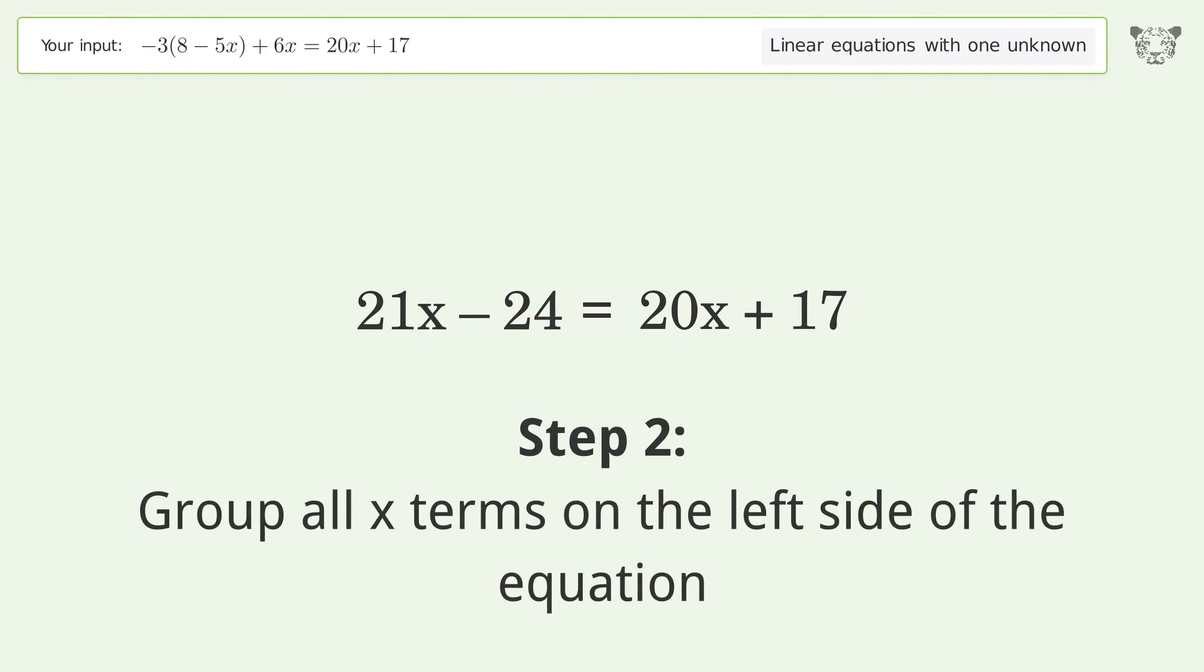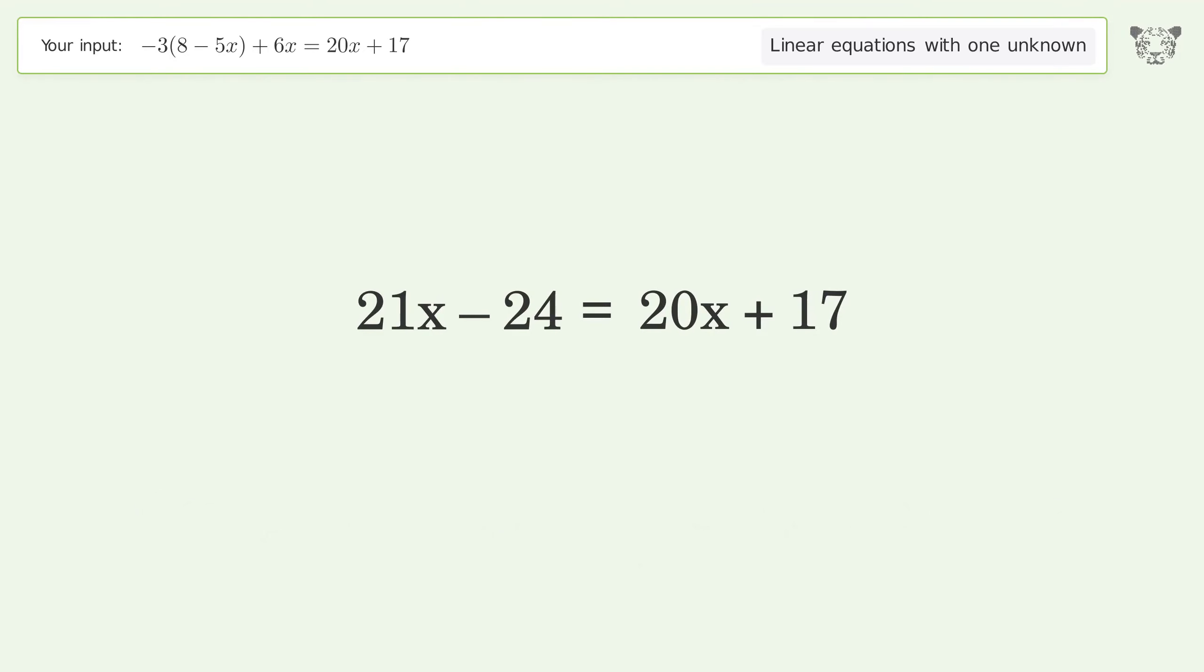Group all x terms on the left side of the equation. Subtract 20x from both sides. Group like terms.